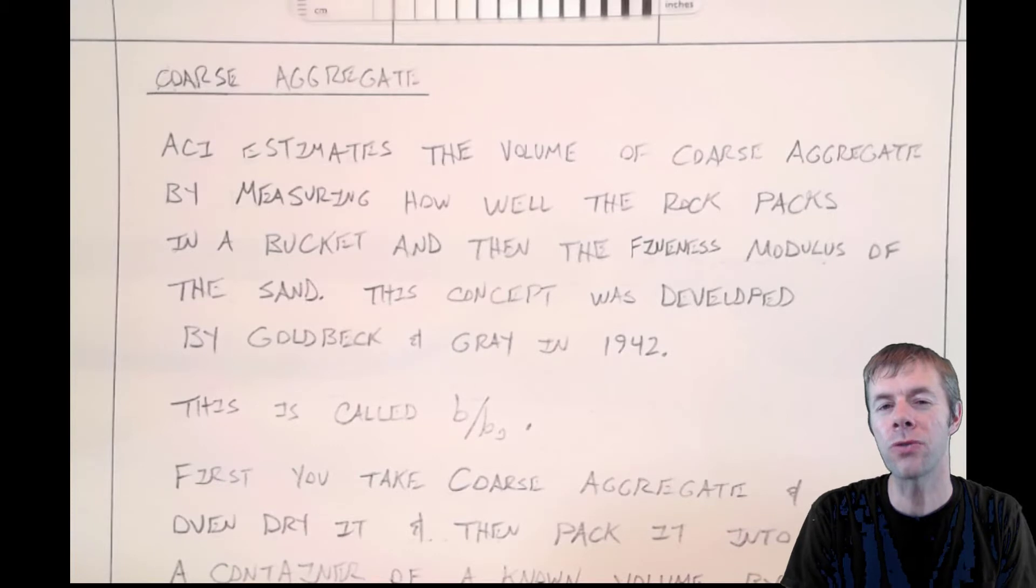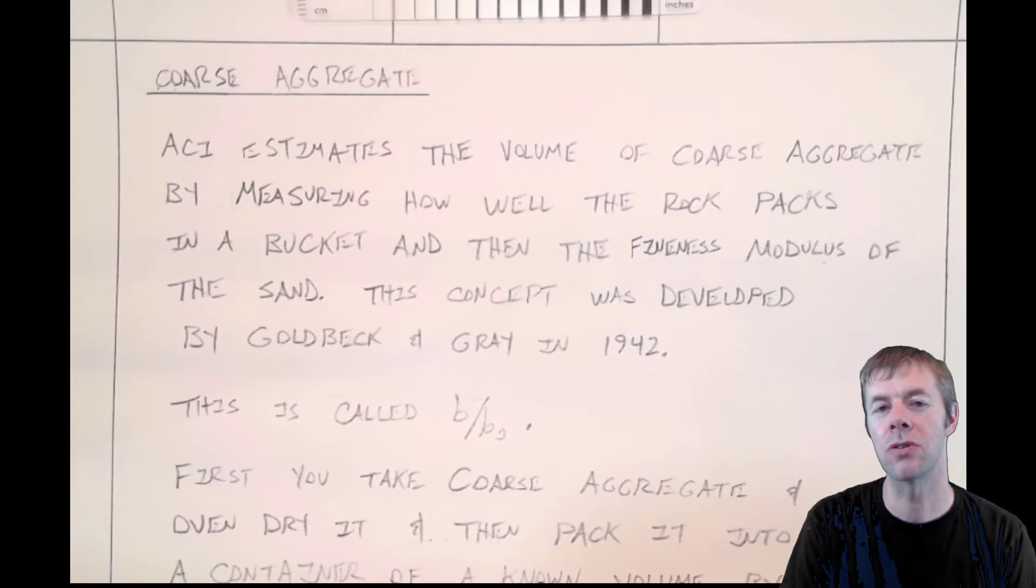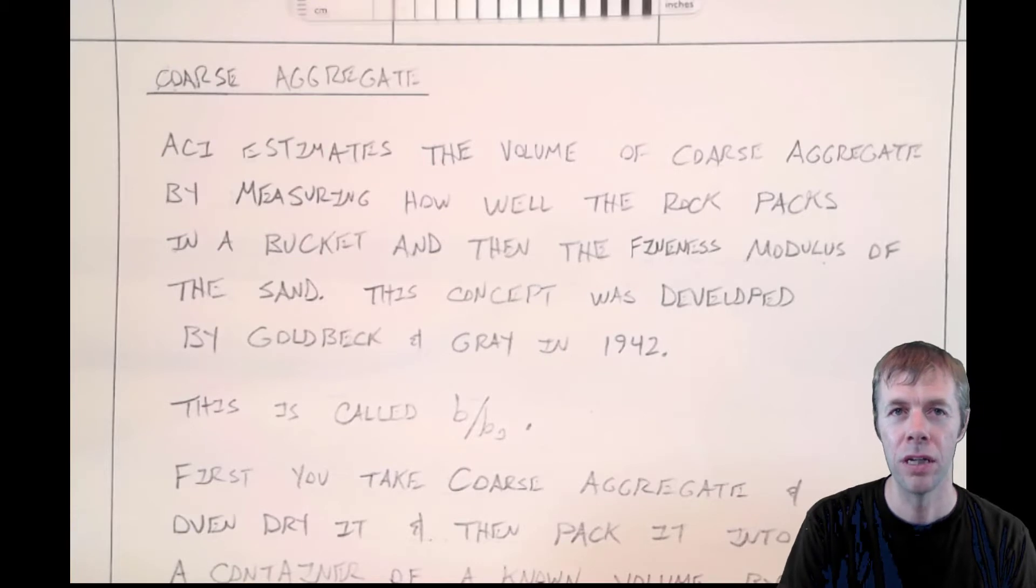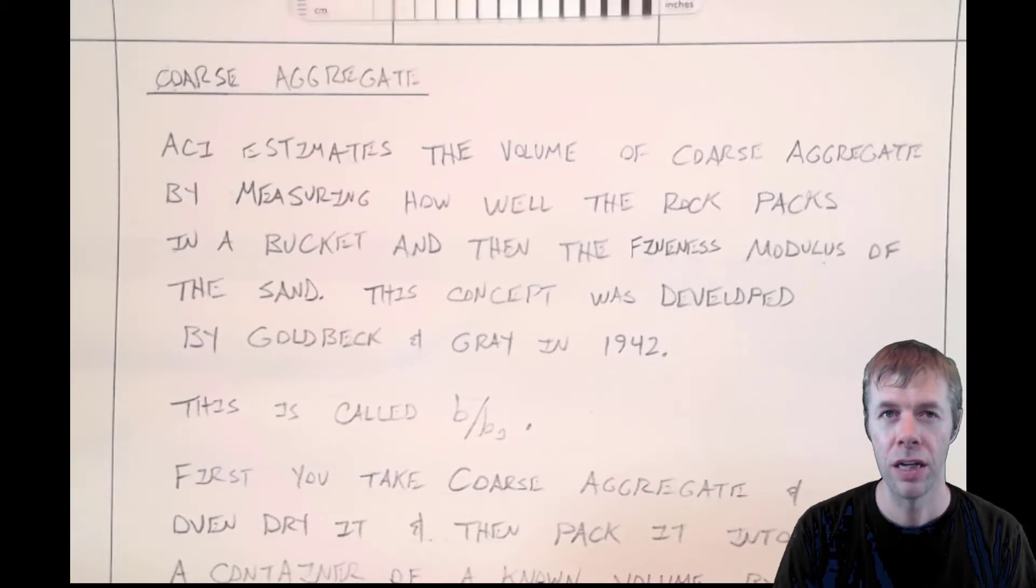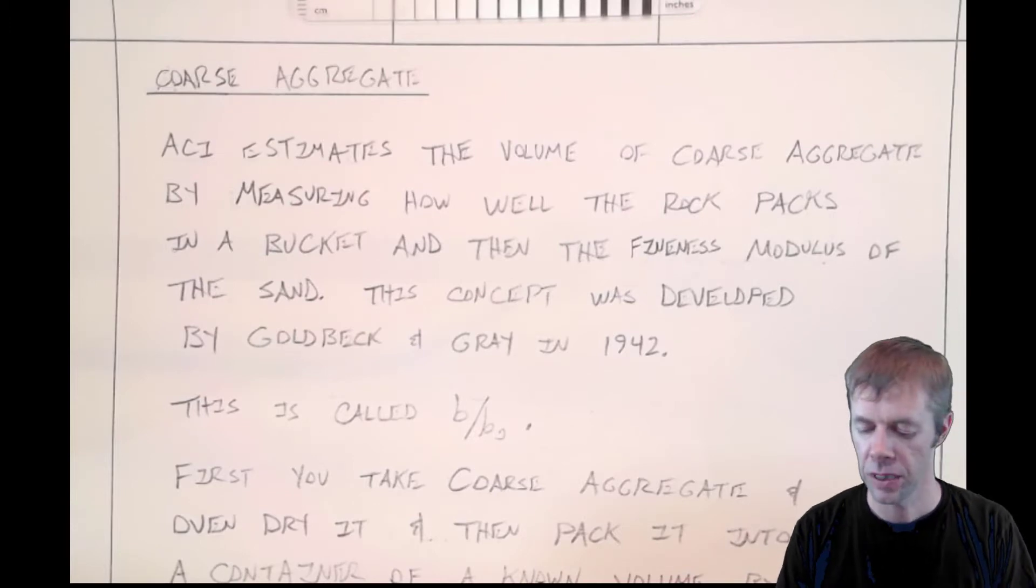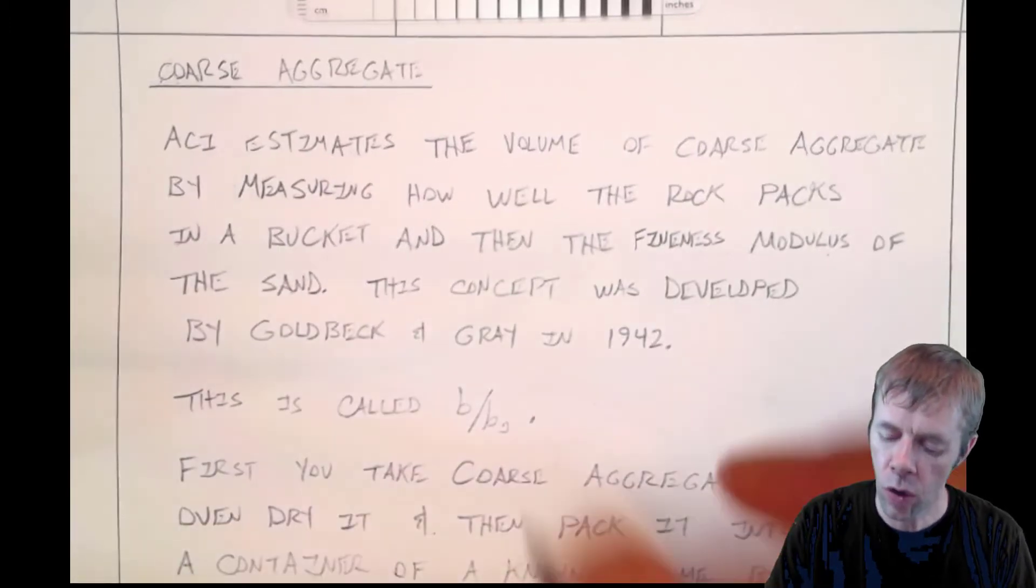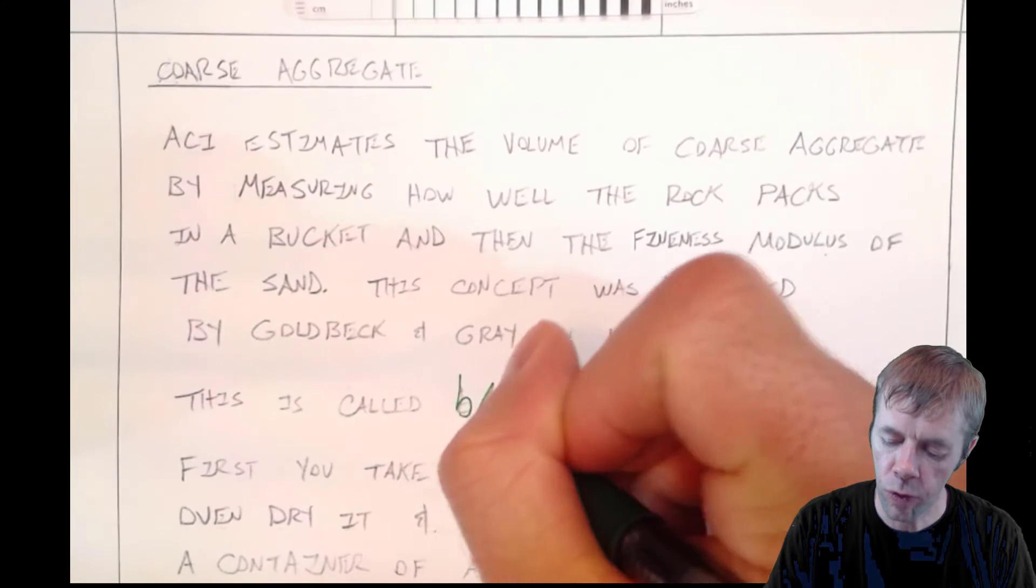And then they're also going to measure the fineness modulus of the sand and combine them together with this concept developed by Goldbeck and Gray in 1942. This whole idea is called the B over B naught.